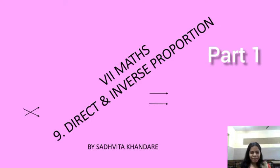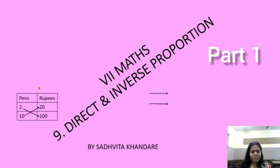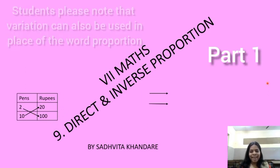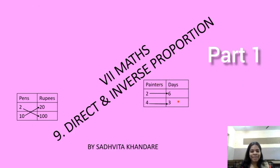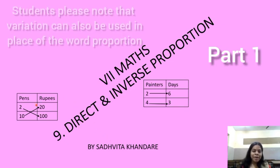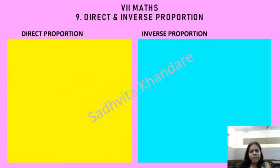Namaskar students and welcome. In this video we are going to start with a new lesson of class 7 maths: direct and inverse proportion. In direct proportion we use cross multiplication, and in inverse variation we use straight multiplication. The name is direct but the multiplication is inverse; the name is inverse but the multiplication is direct.